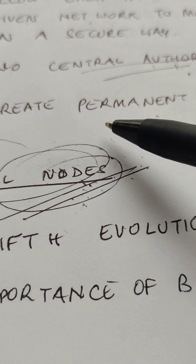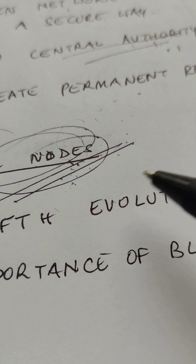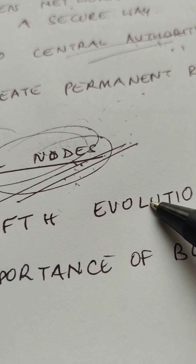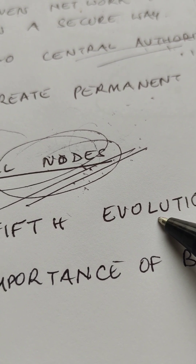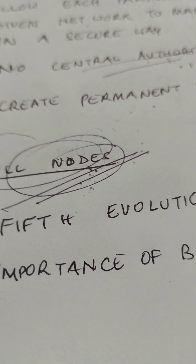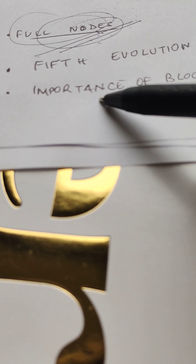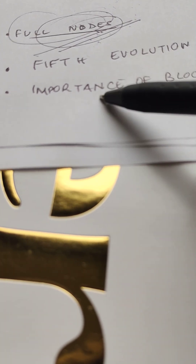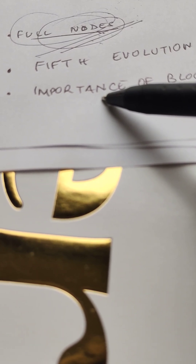Blockchains are recognized as a fifth evolution of computing because they are a new trust layer for the internet. Blockchains are important because they allow for new efficiency and reliability in the exchange of valuable and private information that once required a third party to facilitate, such as the movement of money and the authenticity of identity.